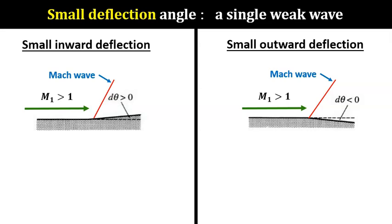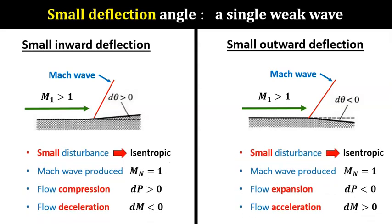Now, because it's a Mach wave, the normal component of the incoming flow crossing the wave has a Mach number of 1. For the inward deflection, there'll be a very small flow compression of positive dp and a very small flow deceleration of negative dm.